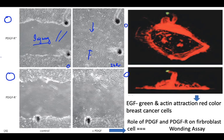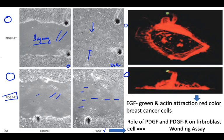Now, cells lacking platelet-derived growth factors were used. Injury was induced, but without the presence of platelet-derived growth factors, the injury still remains. The cells do not come together and anastomose — demonstrating that there is a molecular interplay between the receptor and the growth factor to promote growth.